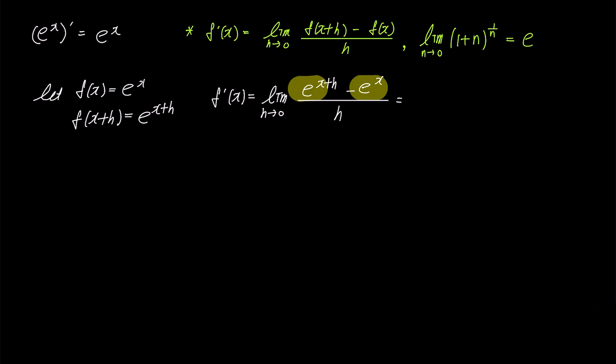We can factorize e to the power of x and rewrite the expression as e to the power of x times e to the power of h minus 1 over h, where the limit is taken as h approaches 0.